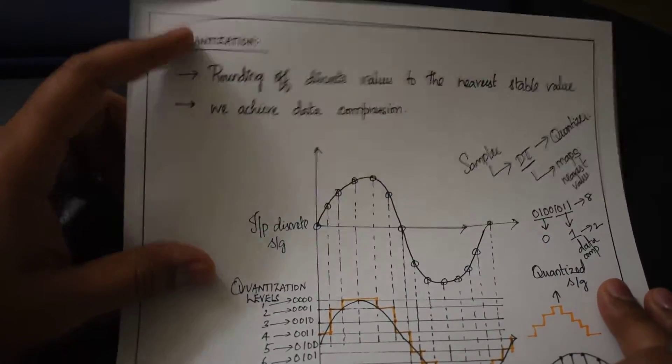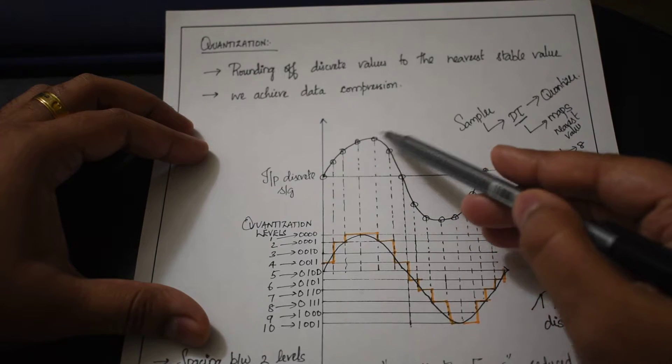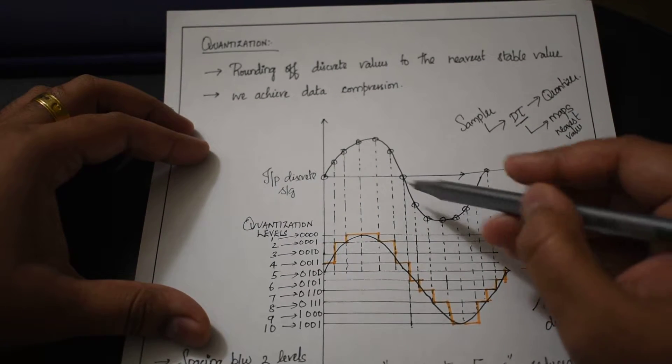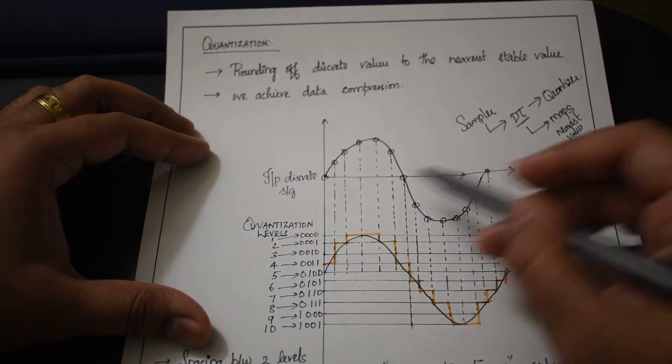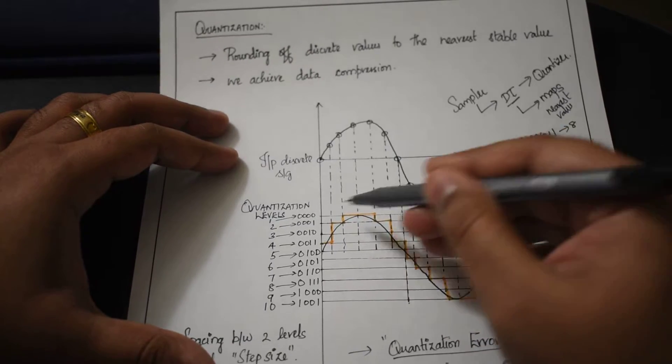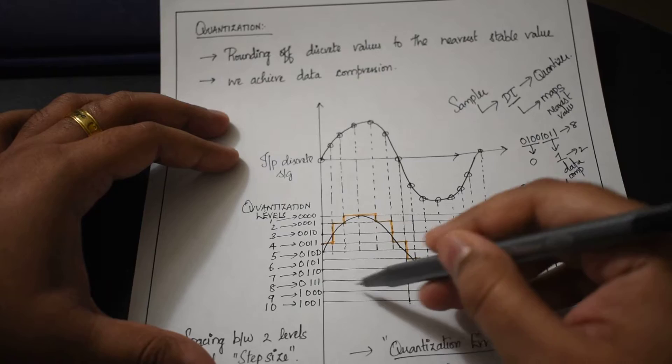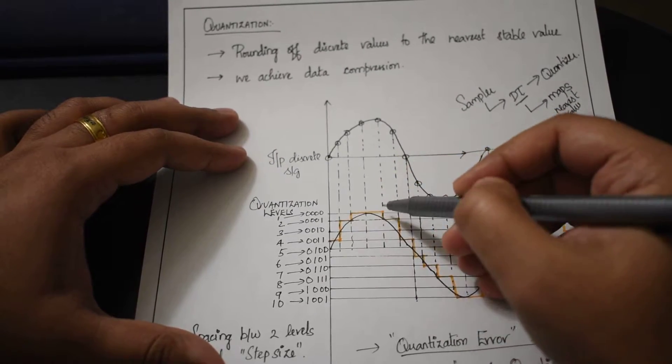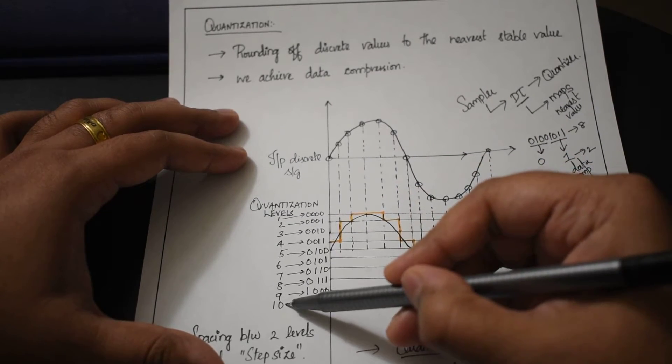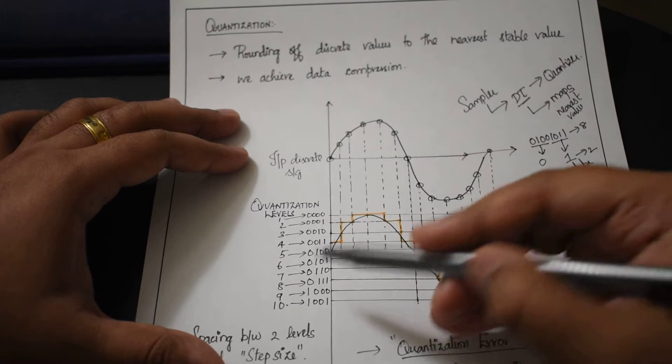Let's see that pictorially. Here I'm taking a discrete time signal. I've marked the discrete elements from x1(t) to xn(t). What I'm doing is dividing the y-axis into multiple levels. Here I've divided the entire graph into 10 levels, from level 1 to level 10, varying from 0000 to 1001.